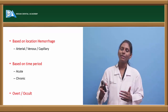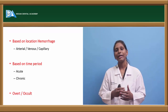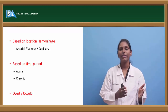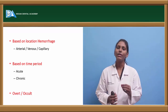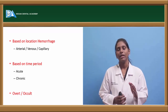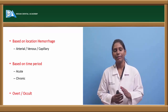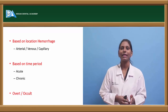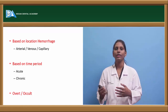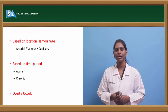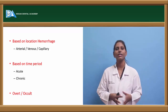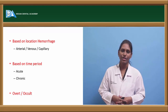Based on time period, hemorrhage can be categorized as acute or chronic. Acute hemorrhage is nothing but sudden loss of blood. The most common causes are trauma, accidents, fresh wounds, or long-standing surgeries.